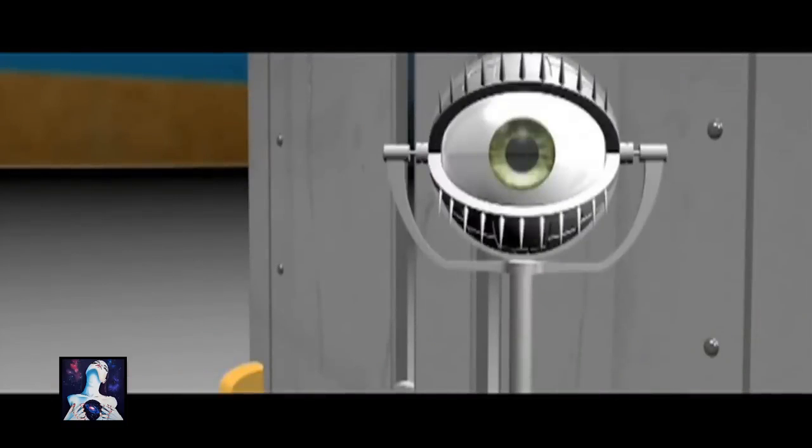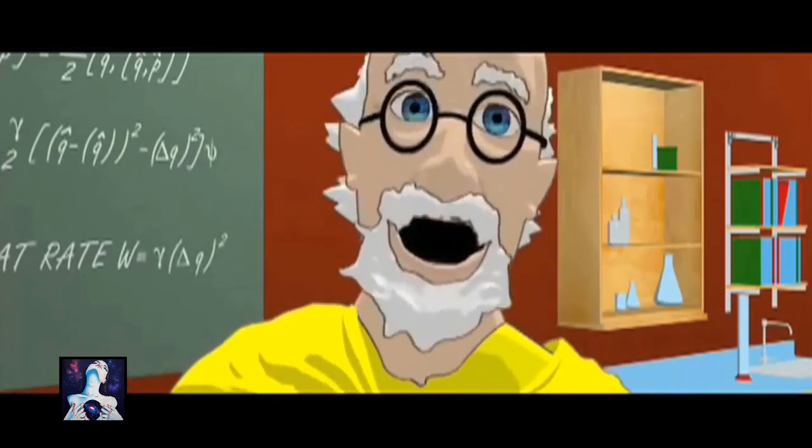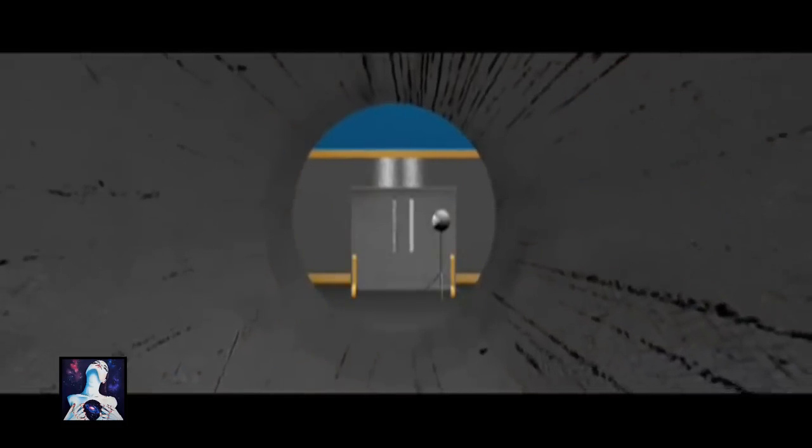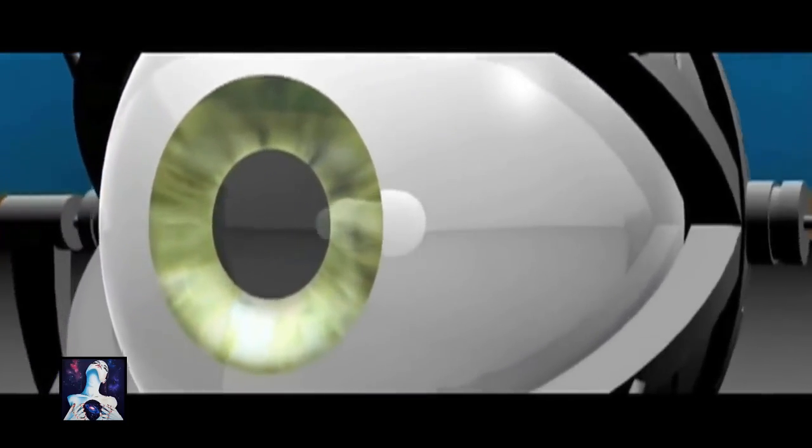The very act of measuring, or observing, which slit it went through, meant it only went through one, not both. The electron decided to act differently, as though it was aware it was being watched.